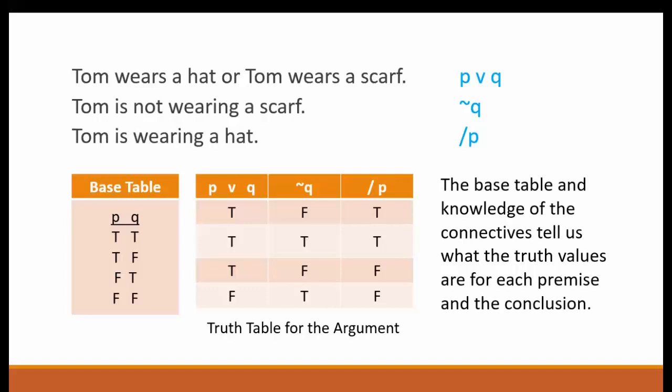The base table on the left shows all possible truth values for any two statements, however they are connected. The first or major premise of the argument is the disjunction P or Q. We know that the only time a disjunction is false is when both statements are false, so rows 1 through 3 are true and only row 4 with two false statements is false. The second premise is symbolized by Q and the negation sign. Not Q has the opposite truth value of Q, so the values for not Q are false, true, false, true — just the reverse of the values under Q in the base table. The conclusion is P. We just repeat the values under P from the base table: true, true, false, false.